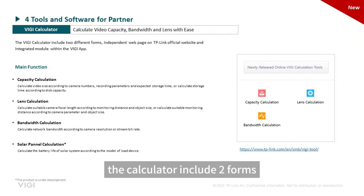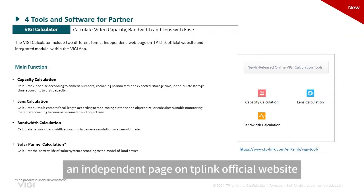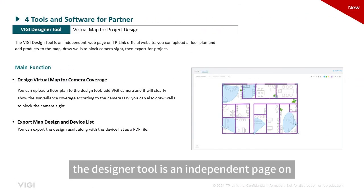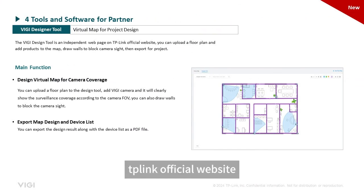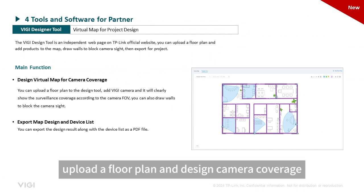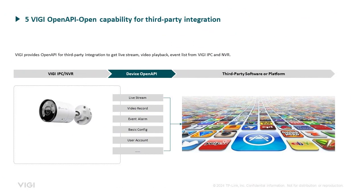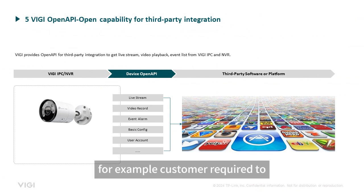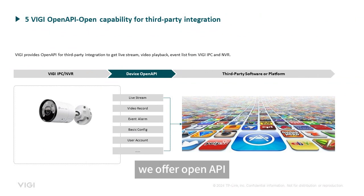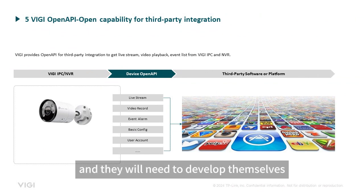The calculator includes two forms: an independent page on the TP-Link official website, and it is also integrated within the VG app — it is mainly for pre-sale product selection. The designer tool is an independent page on the TP-Link official website; its function is basically the same as the virtual map module of VG VMS — upload a floor plan and design camera coverage. The last part is VG OpenAPI, which is for third-party integration. For example, if a customer needs to control VG devices through their existing platform, we offer OpenAPI and they will need to develop the integration themselves.